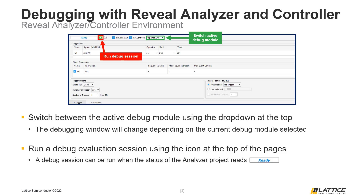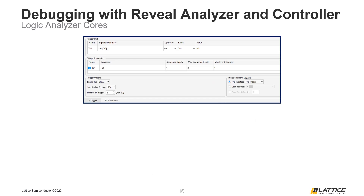Another useful feature is that users can select which cores are analyzed during the debug session by enabling or disabling the checkboxes for a core at the top of the window. We are now going to discuss the tabs for the different debug cores in more depth. The first debug cores we will discuss are Logic Analyzer cores, as seen in the figure on the slide.